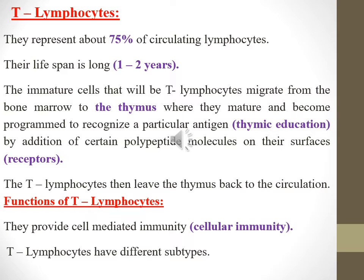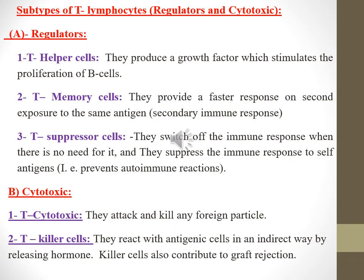The function of T lymphocytes: they provide cell-mediated immunity, or cellular immunity. T lymphocytes have different subtypes. Subtypes include regulators and cytotoxic cells. Regulatory T lymphocytes include T helper cells, which produce a growth factor that stimulates the proliferation of B cells. T memory cells provide a faster response on second exposure to the same antigen — a process called the secondary immune response.